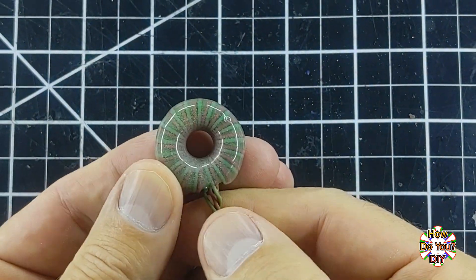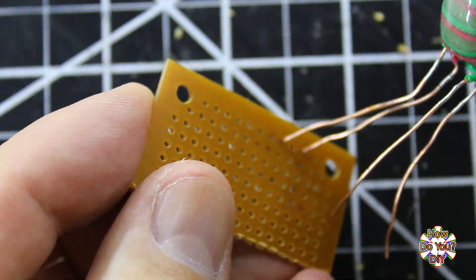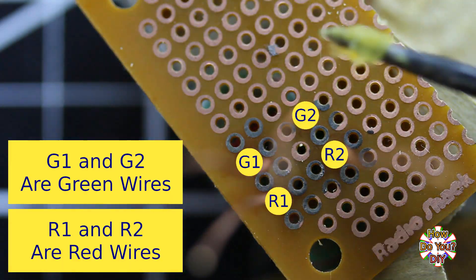When the epoxy sets, I strip back the wires and solder it to the perfboard. Keep track of which wires are which. I have the four connections labeled here.